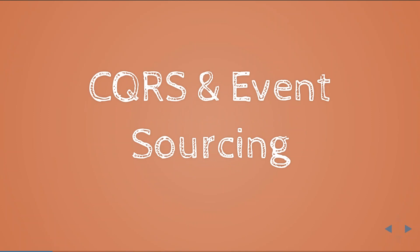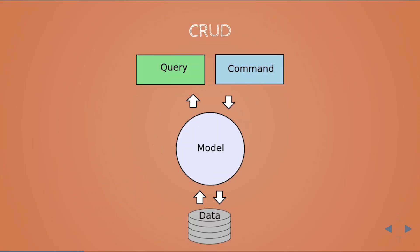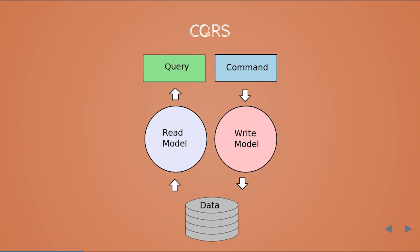You can do CQRS without event sourcing, but you can't do event sourcing without CQRS. So let's start with CQRS first. CQRS stands for Command Query Responsibility Segregation, and basically what this means is that we want to separate our read models from the write models. In a basic CRUD application we have one common model for both query and command sides, but if we want to split those, we create a separate read model for the query and a separate write model for the command side.